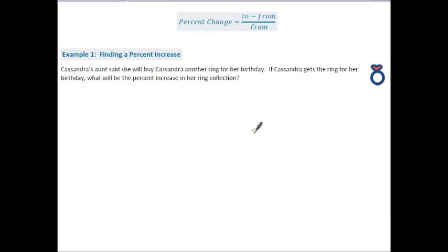Example one says Cassandra's aunt said she will buy Cassandra another ring for her birthday. If Cassandra gets the ring for her birthday what will be the percent increase in her ring collection? What you need to know in order to answer this question is the percent change formula shown above. Percent change is equal to two minus from over from. Now explain the to and from with the beginning of this example. We know that in Cassandra's case she is starting with five rings so that is going to be my from. What her aunt is proposing to do is to buy one more ring and so her collection is going to increase in size to six rings.